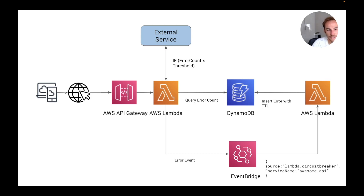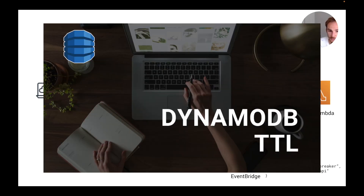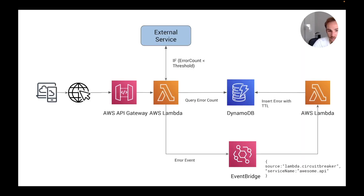So let's say it's the first time our external service triggers an error. We catch the error, send an event to EventBridge, and EventBridge triggers another Lambda function which adds an item to DynamoDB. How we add this item is by using an item with a TTL — time to live. If you're not familiar with DynamoDB TTL, I made a video about it. Basically, you can add an item with an expiration time, and after that time expires, DynamoDB will delete the item.